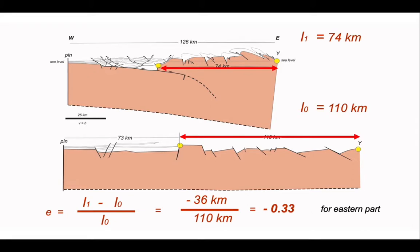So we can make our measurements again. There they are. L0 is the restored length of 110 kilometers. That equivalent geology has been contracted to a length of L1, which is 74 kilometers. We can plug those numbers into the expression for elongation. And we come out with a strain of minus 0.33. It's a contractional strain. Therefore it's a negative E for this eastern part of our cross-section.